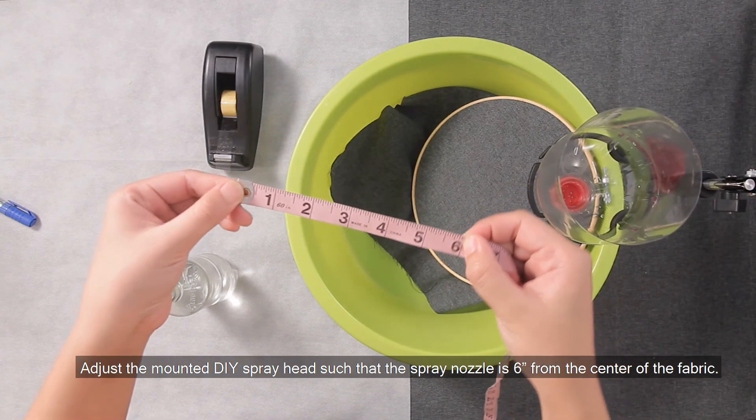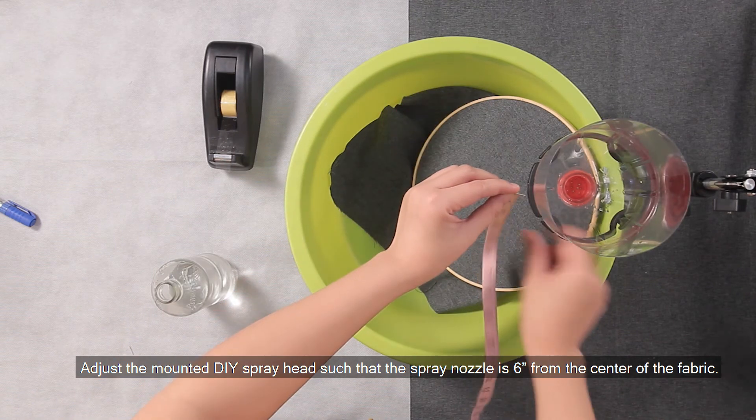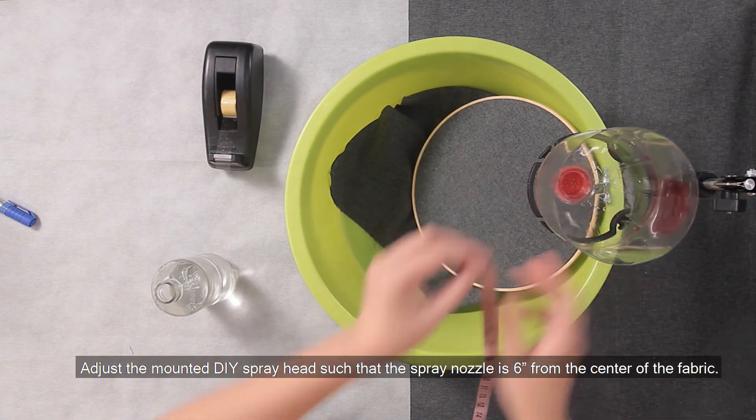Adjust the mounted DIY spray head such that the spray nozzle is 6 inches from the center of the fabric.